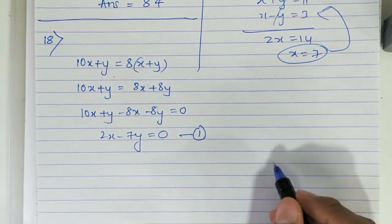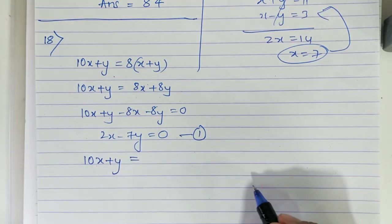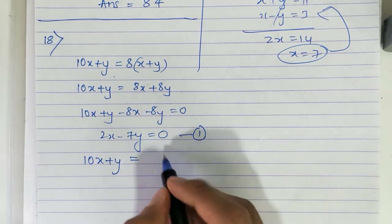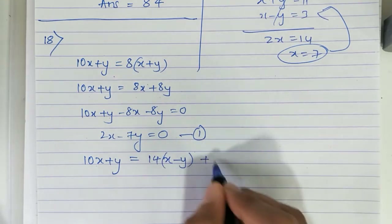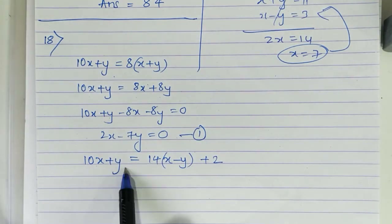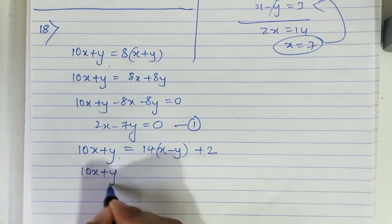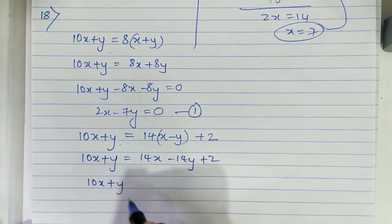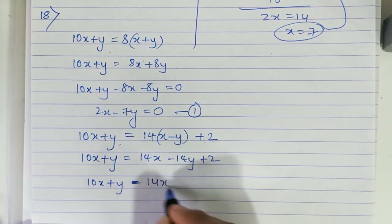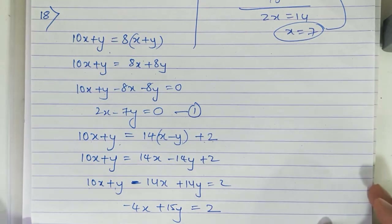The second equation: 'it is also obtained by multiplying the difference of the digits by 14 and adding 2.' Difference of digits means x minus y. So 10x+y equals 14(x−y) plus 2. Shifting: 10x minus 14x is minus 4x, y plus 14y is 15y, equals 2. This is the second equation.